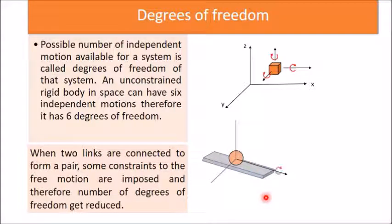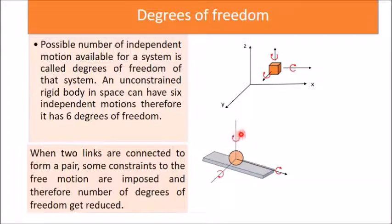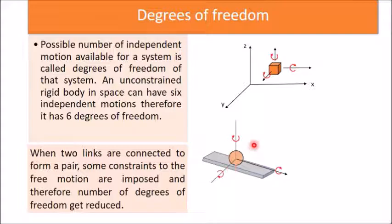Now checking rotational motions: the sphere can rotate about the x axis (rolling without losing contact), rotate about the y axis, and rotate about the z axis as well. So the only restrictions imposed are linear motion along y and linear motion along z. Number of restrictions = 2, therefore degrees of freedom = 6 minus 2 = 4. In this particular pair, the number of degrees of freedom is 4.